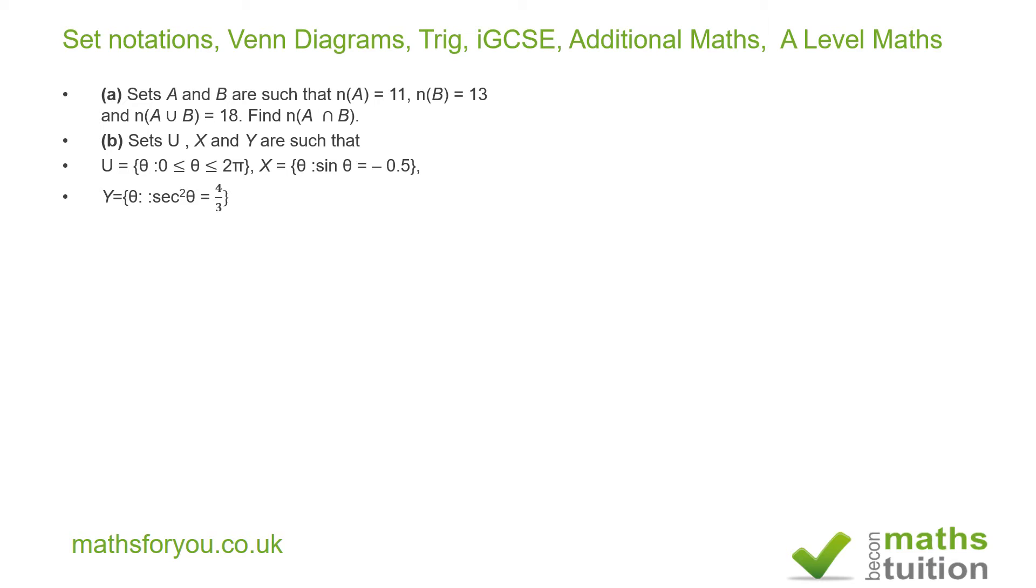Now, it then says find in terms of π the elements of the set X, and part 2 of section B says find in terms of π the elements of the set Y. Now for the third part of B, it says use set notation to describe the relationship between the sets X and Y.